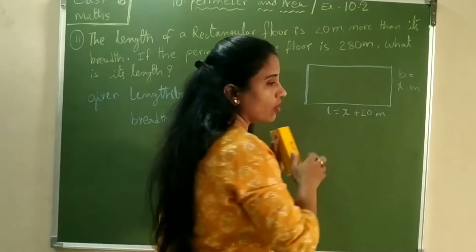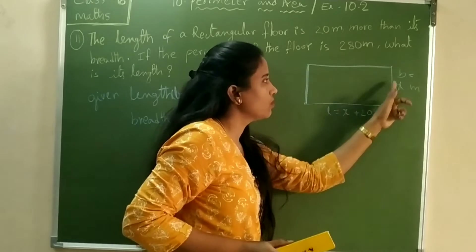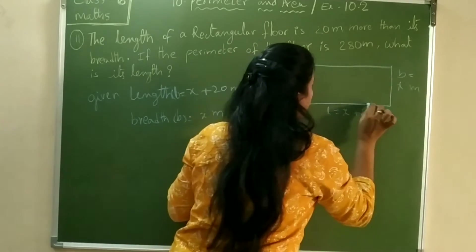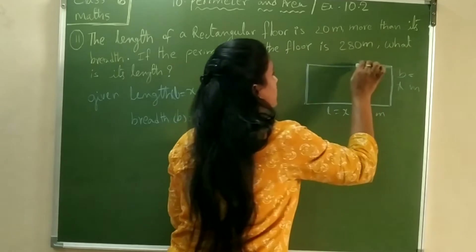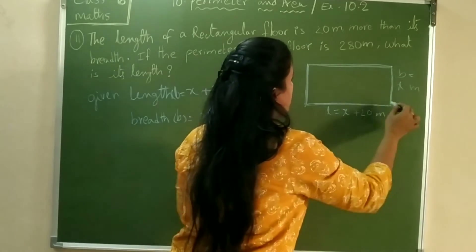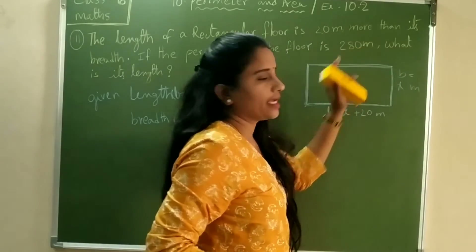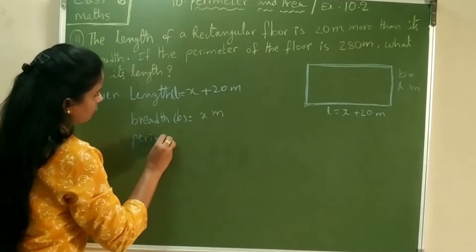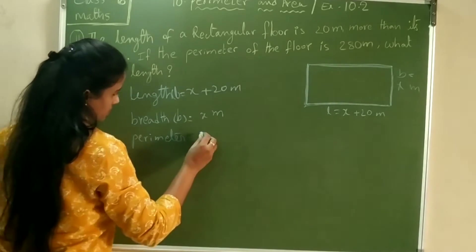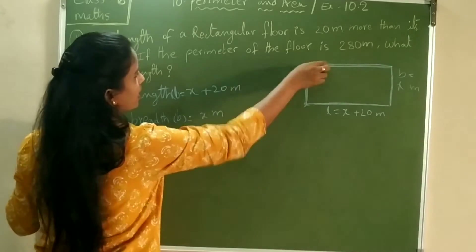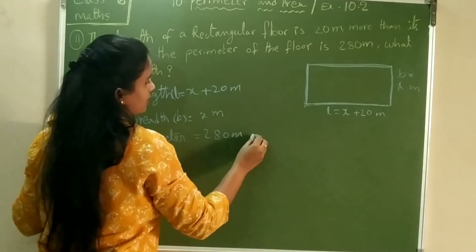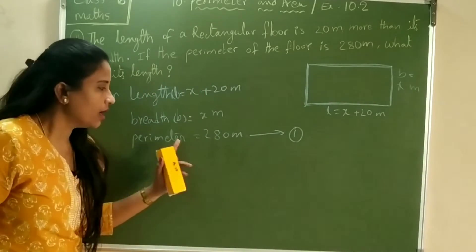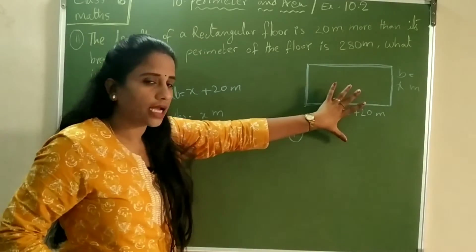They have also given the perimeter. The perimeter is the boundary of the closed figure — the total boundary or frame. The perimeter of the floor is 280 meters. So perimeter = 280 meters. Take this as equation 1.